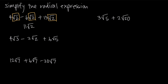Let's look at another example: 12 root 7, plus 6 root 7, minus 20 root 7. Same idea — we look at our square roots and see they're all square root of 7, which means these are like terms we can combine. 12 plus 6 is 18, and 18 minus 20 is negative 2. So our answer is negative 2 root 7.